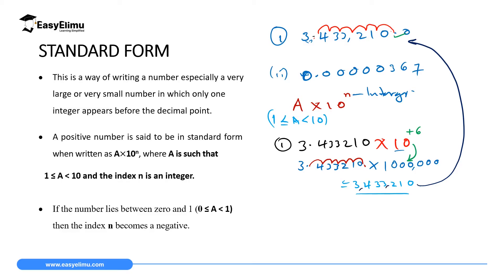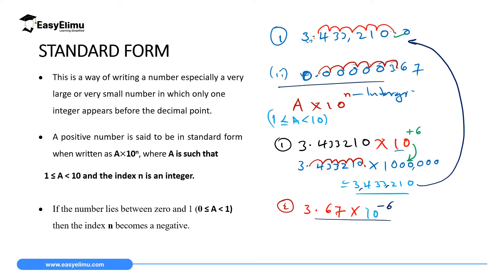For the very small number 0.0000367, to write it in standard form we move the decimal point to the right until we reach an integer. We move 1, 2, 3, 4, 5, 6 places to the right. When moving to the right, the power becomes negative. So we write it as 3.67 times 10 raised to power negative 6. When you move to the left the power is positive; when you move to the right it becomes negative.